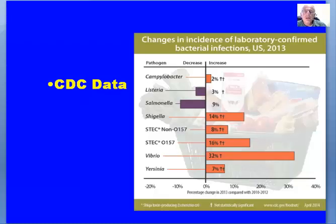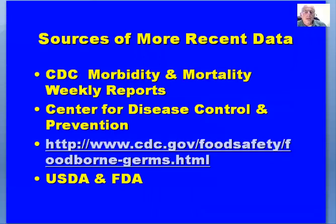How are we doing as we look at controlling foodborne pathogens in the food supply? Looking at changes in incidence of laboratory-confirmed bacterial infections using 2013 data, we can see things like Campylobacter, Listeria, Salmonella, and Shigella trends. We see a decrease in Listeria and Salmonella with decreases in the other major foodborne pathogens found in the food supply. More recent data can be found in CDC Morbidity and Mortality Weekly Reports. The CDC website also provides very good information on foodborne illness.